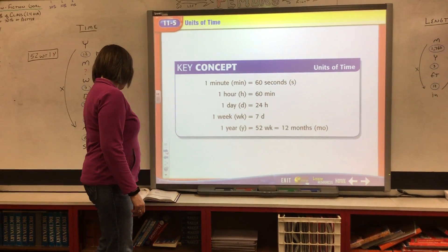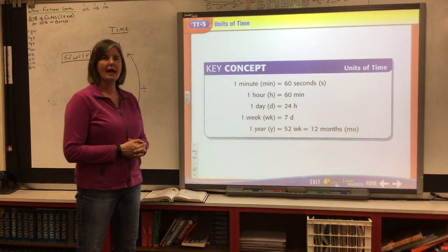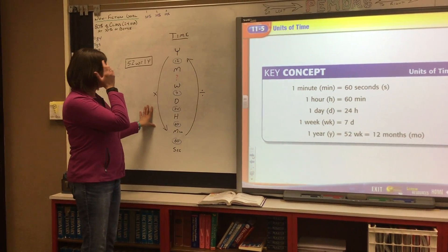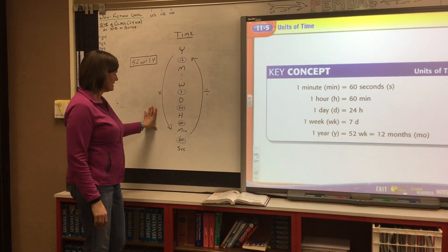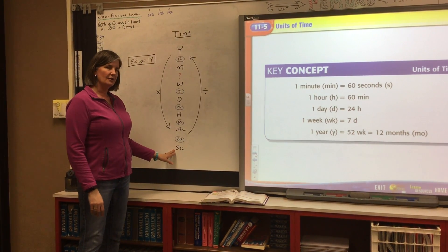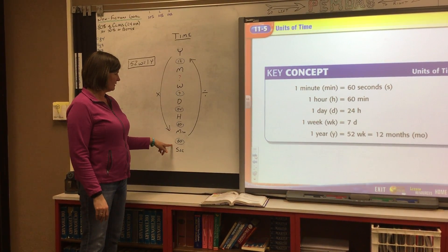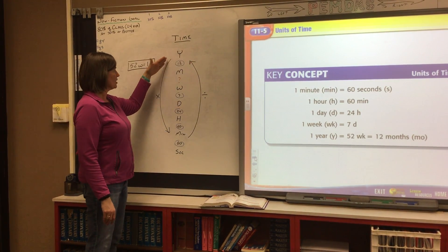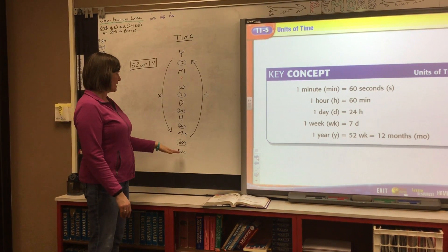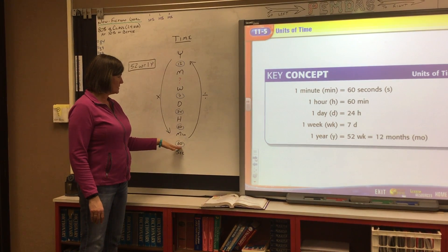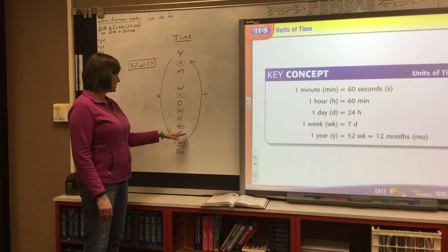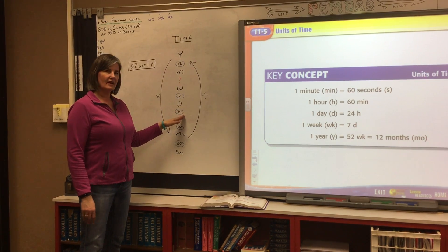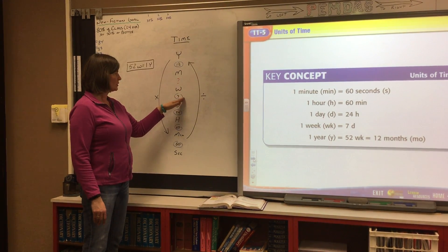If we look over on our sideboard here, we also have another chart like we did for length, capacity, and weight. Starting with our smallest unit at the bottom, that is a second. To convert from smaller units to larger units, remember you're going to divide. If you're going from larger units to smaller units, remember you're going to multiply. So if we have a certain number of seconds and we want to change that to minutes, we will divide by 60. Minutes to hours, divide by 60. Hours to days, divide by 24. Days to weeks, divide by 7.